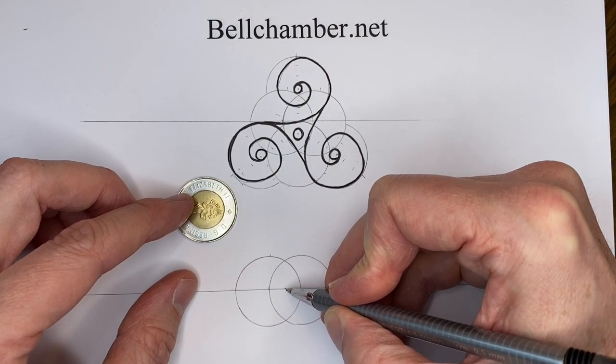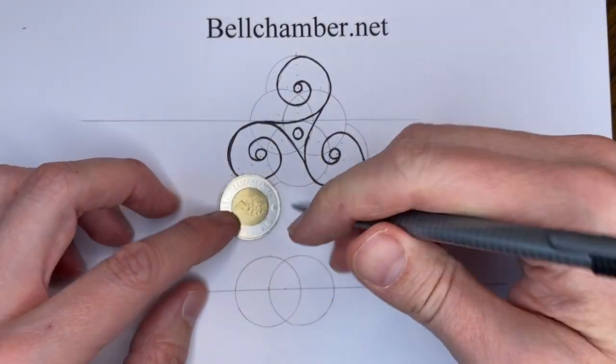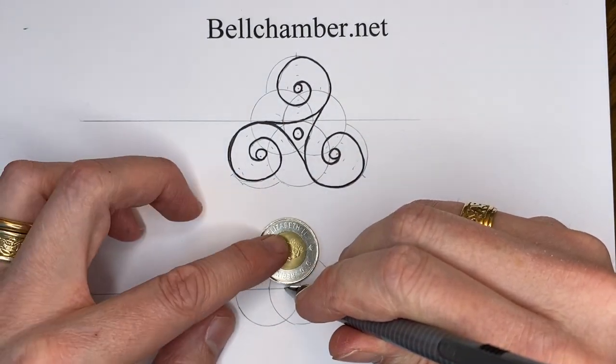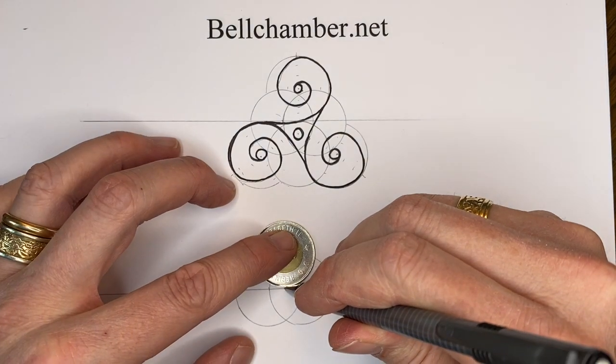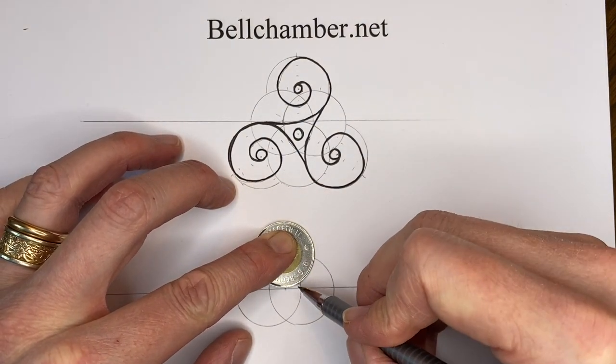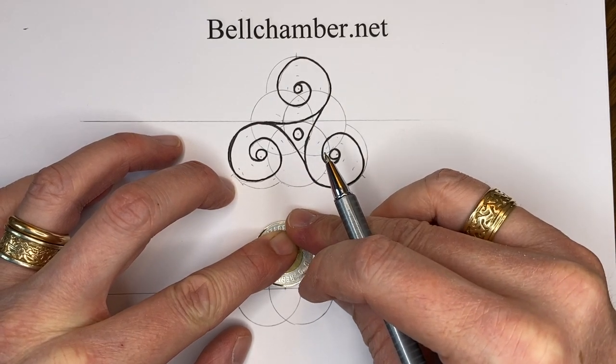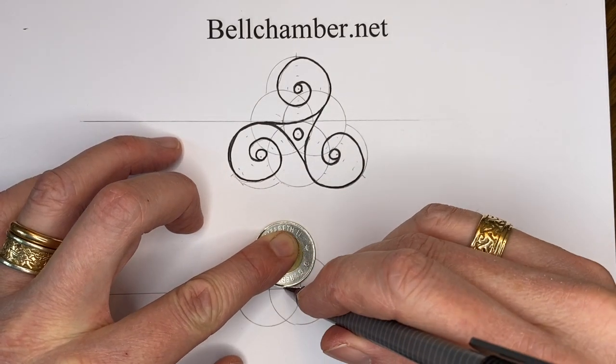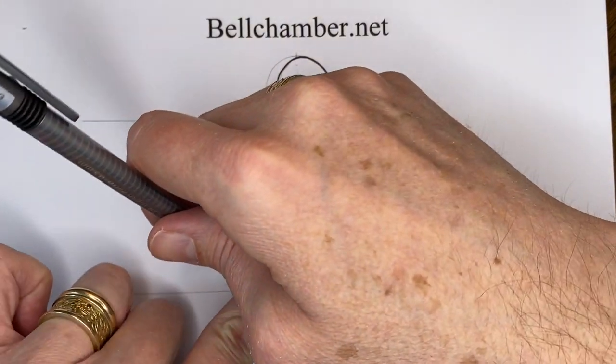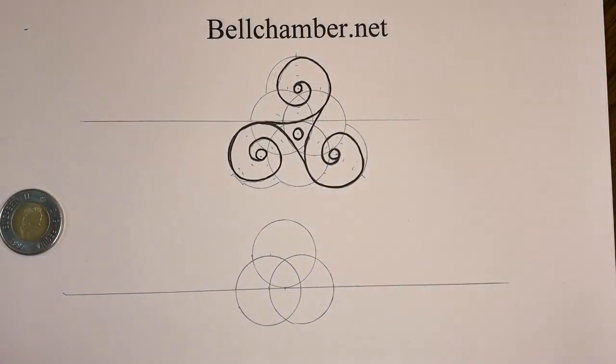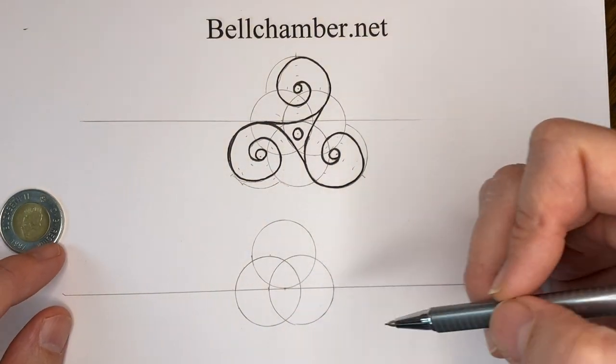Estimate where you think the center of these two circles are. I'm putting my pencil down there and I'm bringing the coin down to it. I'm holding on to it and I'm looking at these two parts. I just want them to be even. I lightly trace over it. And we've got that nice trifold.